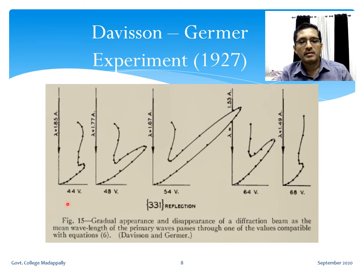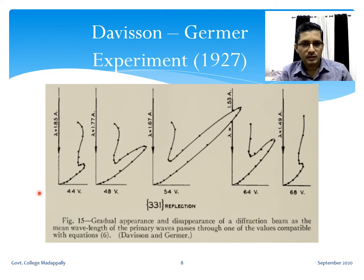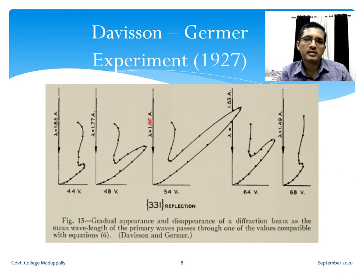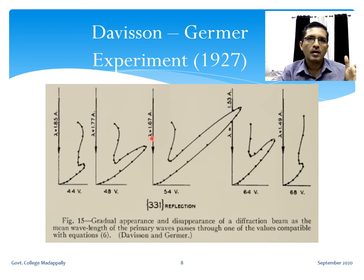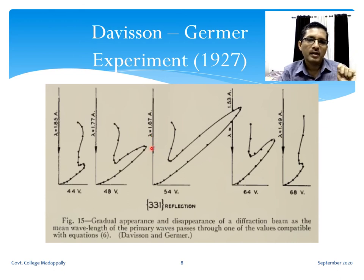Here are the graphs from the original paper of Davisson and Germer in 1927. These are their original graphs. At 54 volts, the λ shown is 1.67 angstroms — exactly what we obtained. In fact, the formula √(150.45/V) and the diffraction formula d sin φ = nλ for scattering from the surface layer both appear in their original paper.